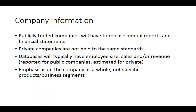Next we'll look at two company databases: Mergent Online and Reference USA. Mergent Online is focused on publicly traded companies, while Reference USA is more focused on private companies as well as individual branches or locations. It is easy to use a public company database to find annual reports and financial information because public companies are required to report various pieces of information to their investors and the public. Private companies have less information they have to report, so sometimes you'll be limited to sales estimates. Both types of databases are more oriented towards whole company information as opposed to individual product lines or business units.